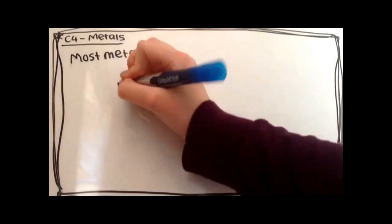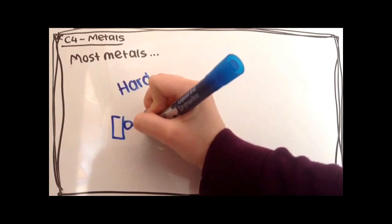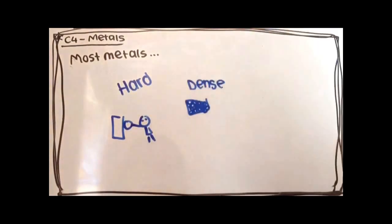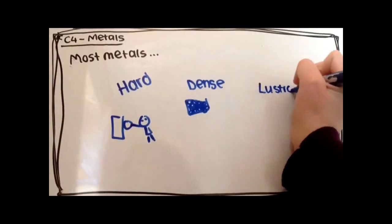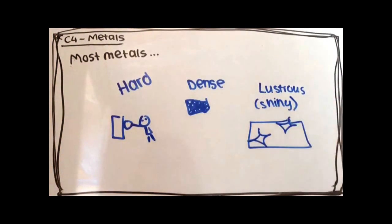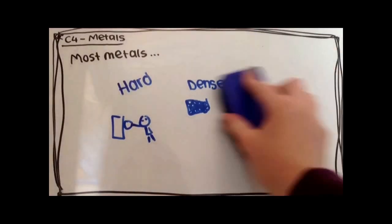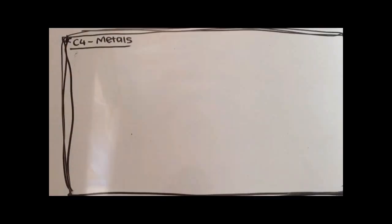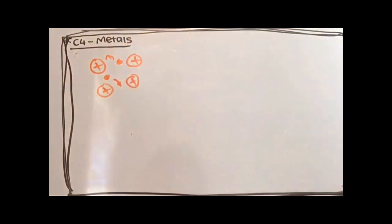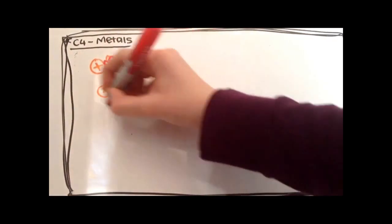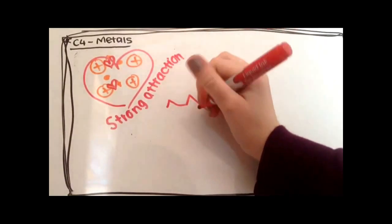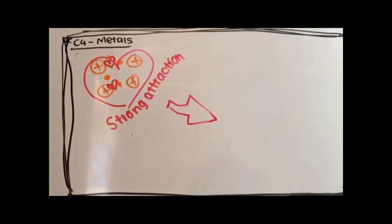Most metals are hard, dense, and lustrous, which also means shiny. There's a strong attraction between the delocalised electrons and the closely packed positive ions, and this causes a very strong metallic bonding.